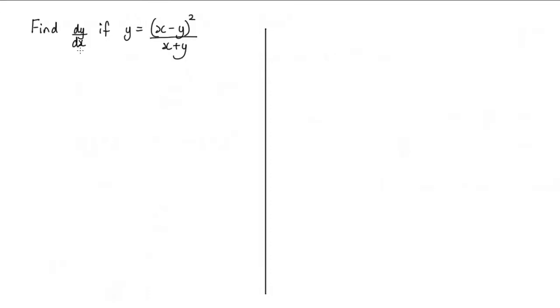In this question we're asked to find dy by dx if y is equal to this here. Now the way I'm going to approach this is to multiply both sides by this denominator.